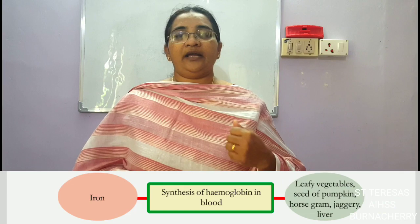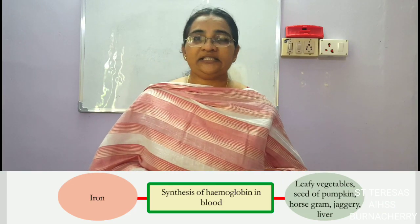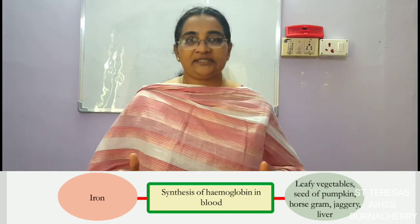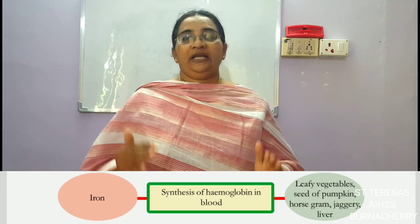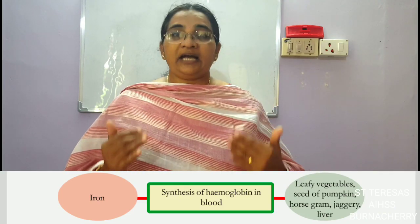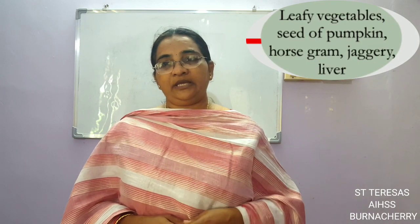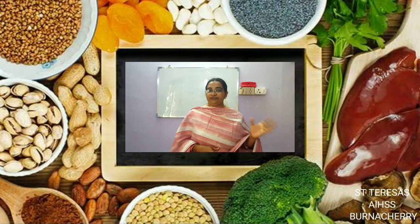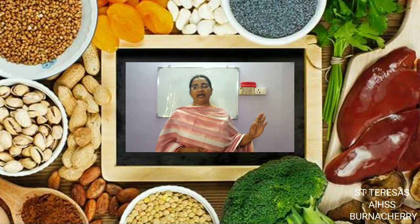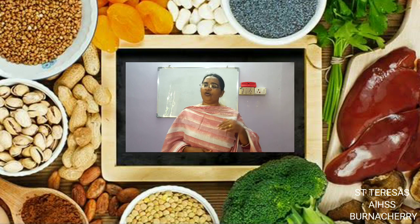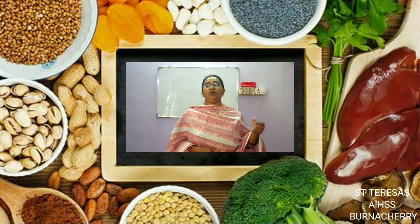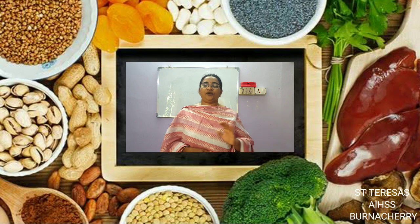The first mineral is iron. Iron helps in the synthesis of hemoglobin in the blood. The red blood cells contain hemoglobin, and the iron content in food helps us synthesize the hemoglobin in the red blood cells. We get iron from leafy vegetables — amaranthus, cabbage, moringa leaves, taro leaves, leaves of pumpkin and pea — all these are good for getting iron in our body.